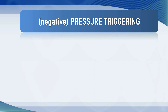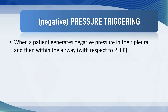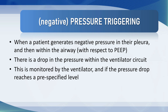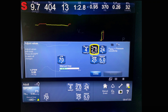In order for a patient to synchronize with the ventilator there must be a mechanism for them to trigger a breath. On early ventilators, the patient's negative airway pressure was recorded by the ventilator, and if the magnitude of the negative pressure deflection was within the trigger window, a breath was delivered. When the patient generates negative pressure in their pleura and within their airway with respect to PEEP, there is a drop in pressure within the vent circuit. If the pressure drops to a pre-specified level, the ventilator triggers a breath. In this example, we see a negative pressure sensitivity of minus two centimeters of water. The problem is that it requires quite a substantial effort to generate negative pressure measurable at the Y — where the endotracheal tube connects to the vent circuit.